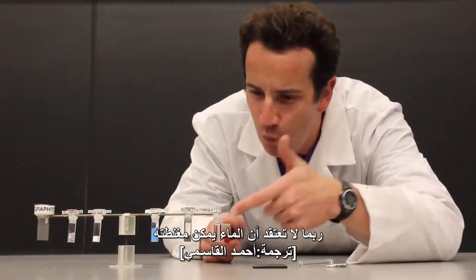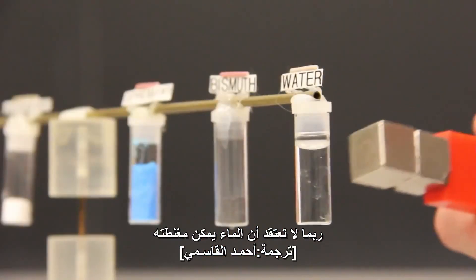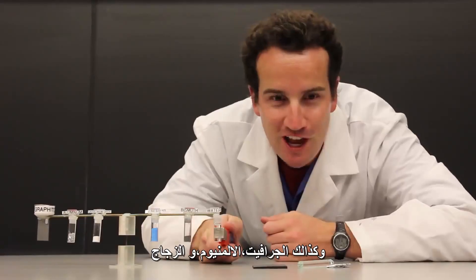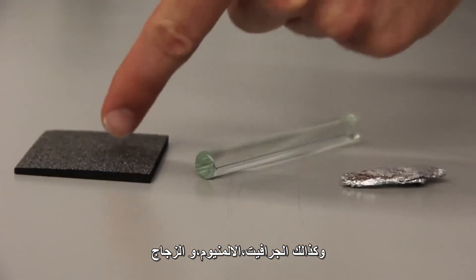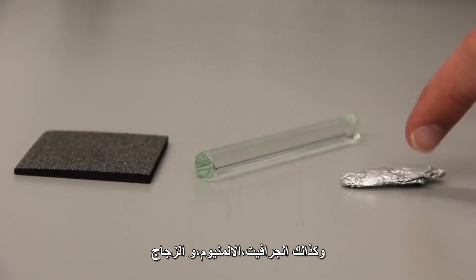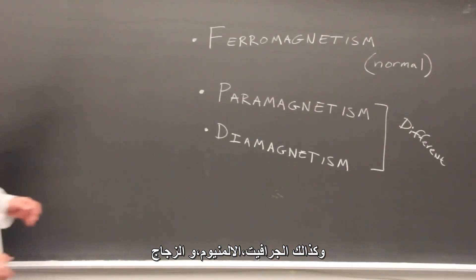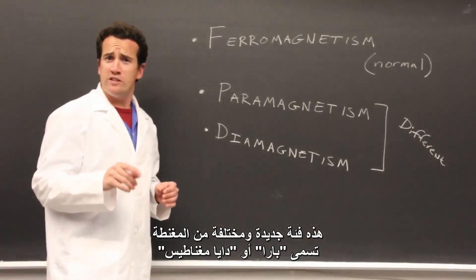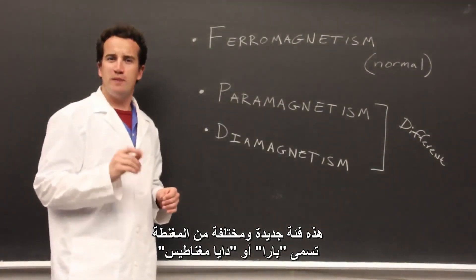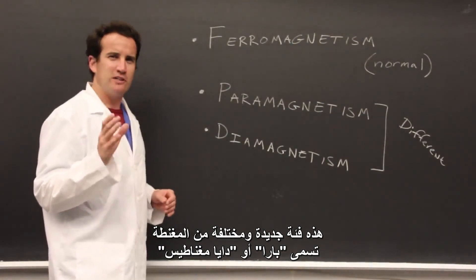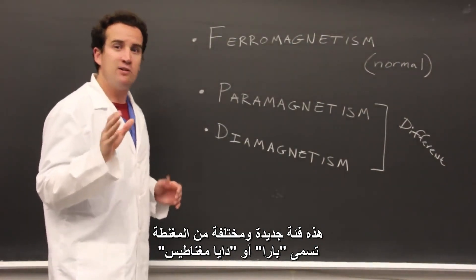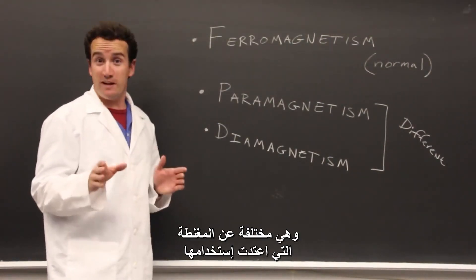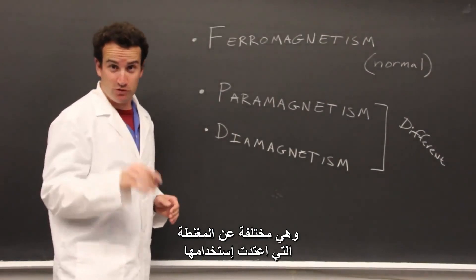You might not think of water as being magnetic, but it is, and so are graphite, aluminum, and glass. This is a new and different category of magnetism called either para- or diamagnetism, and it's different from the magnetism that you're used to.